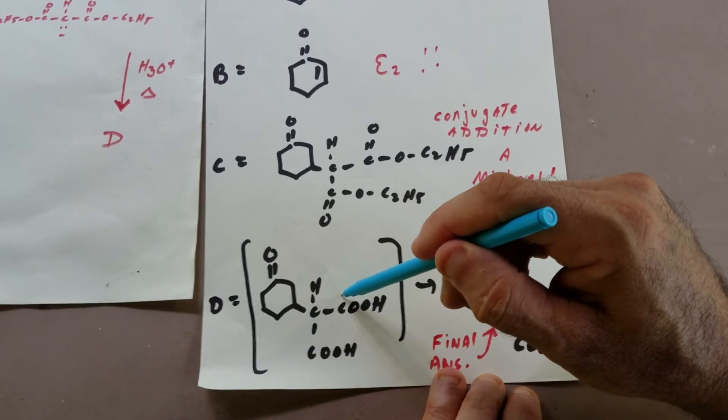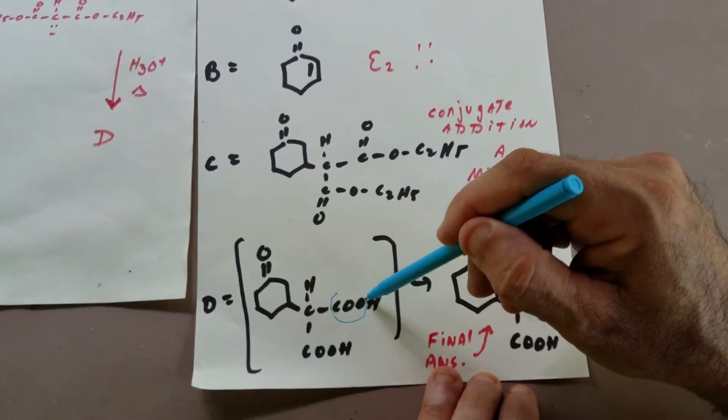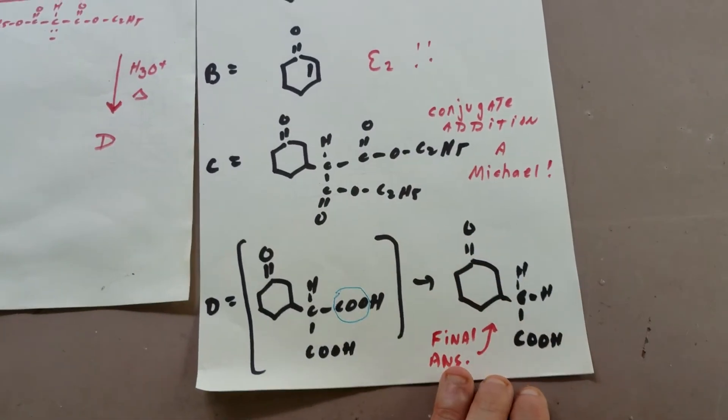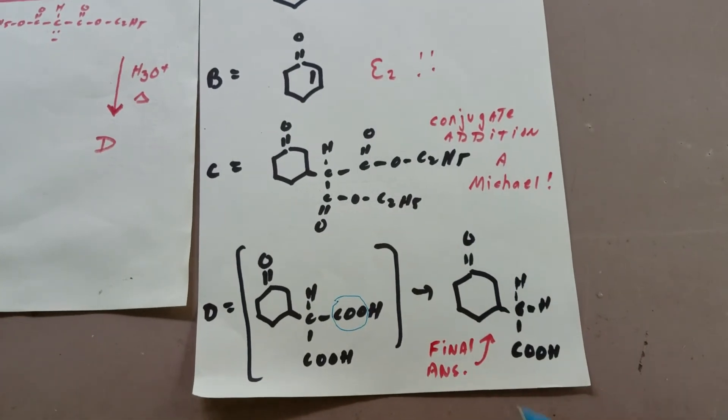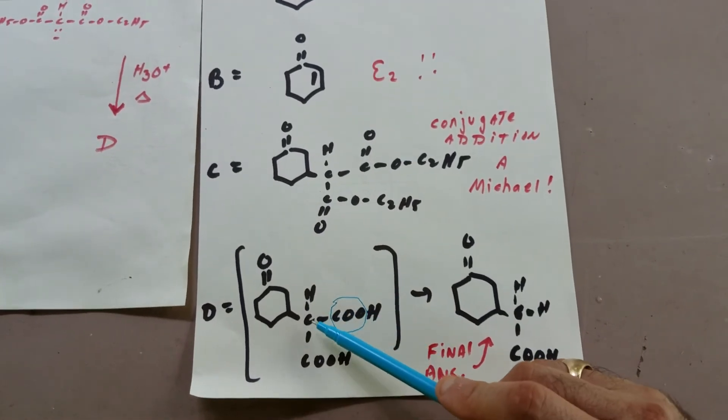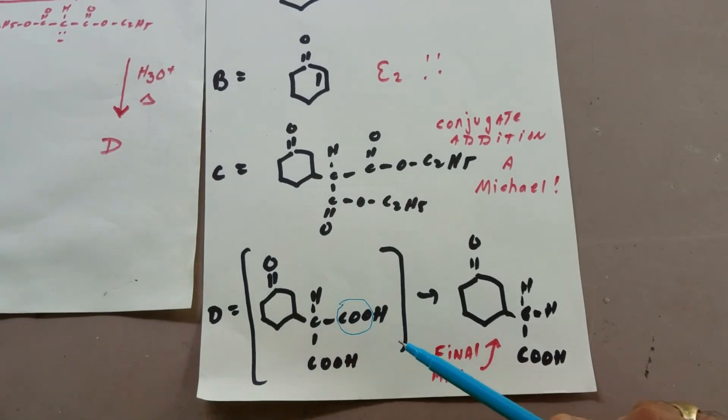So what you're going to do is you're going to lose one of the CO2 groups. And that's going to be lost because two COOH groups on the same carbon is unstable.